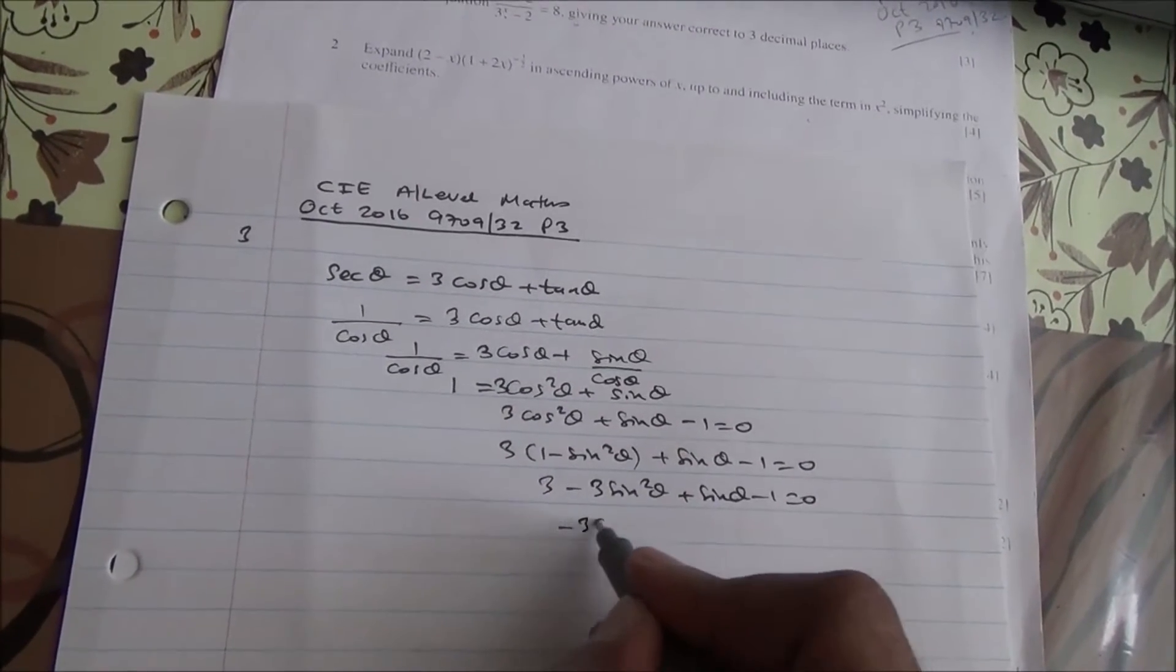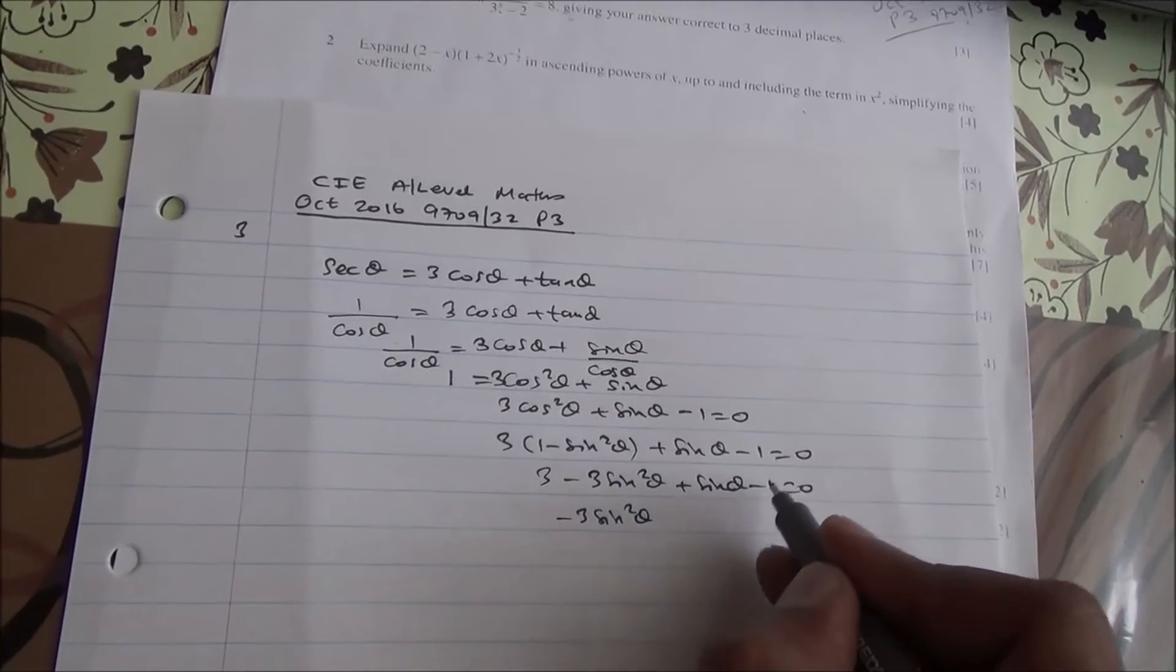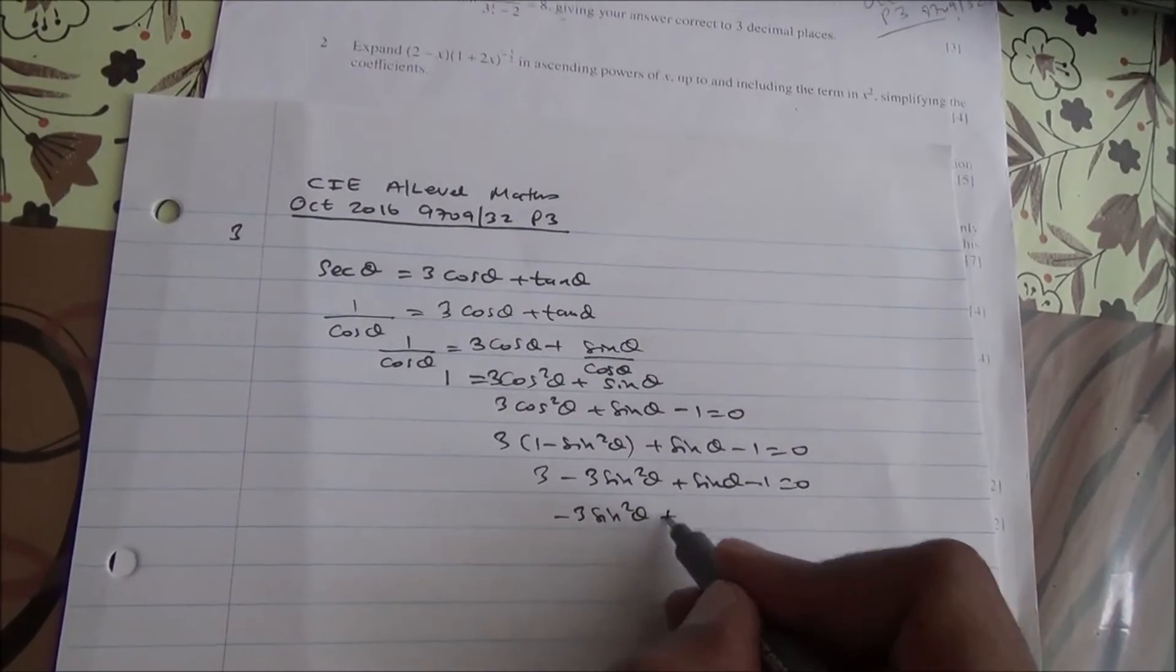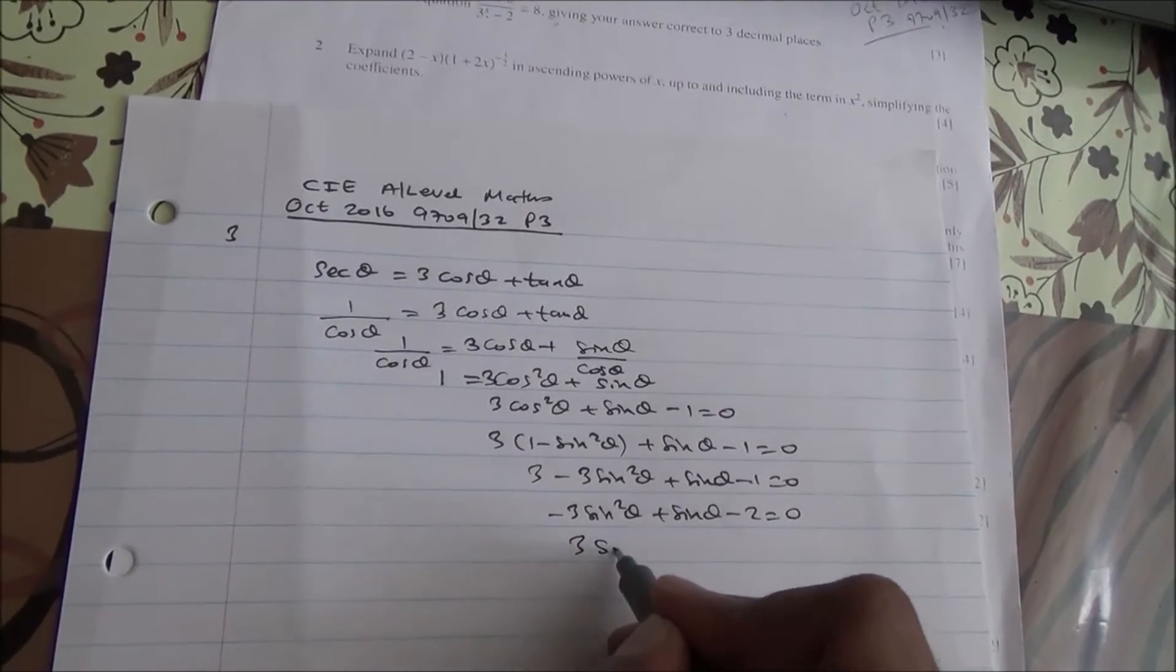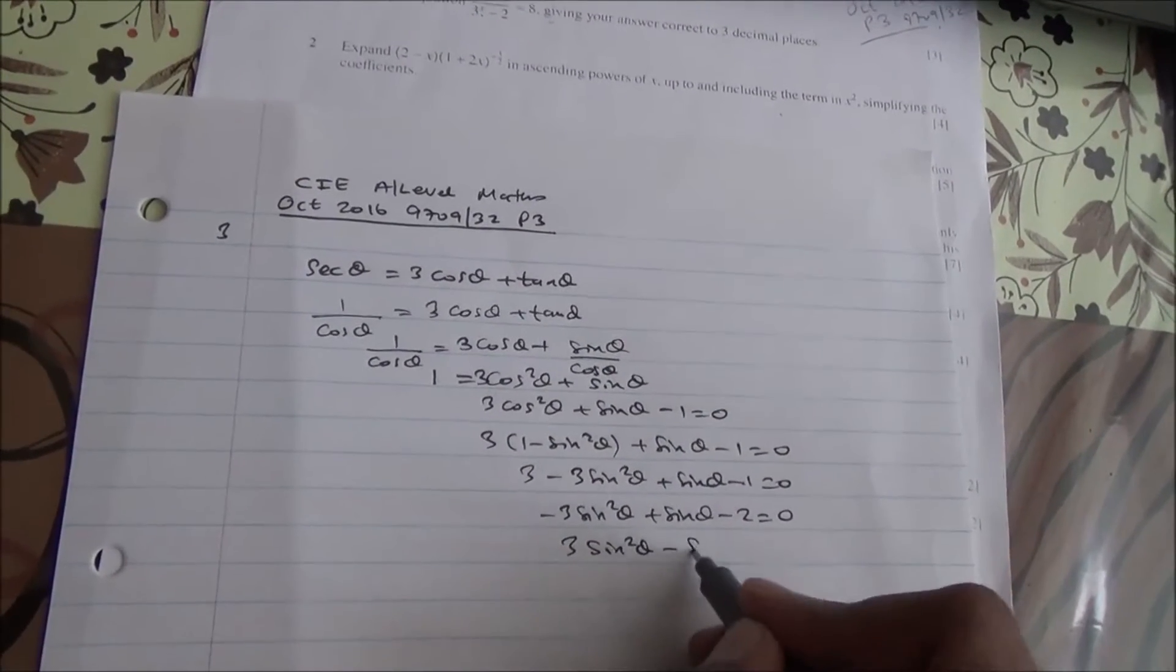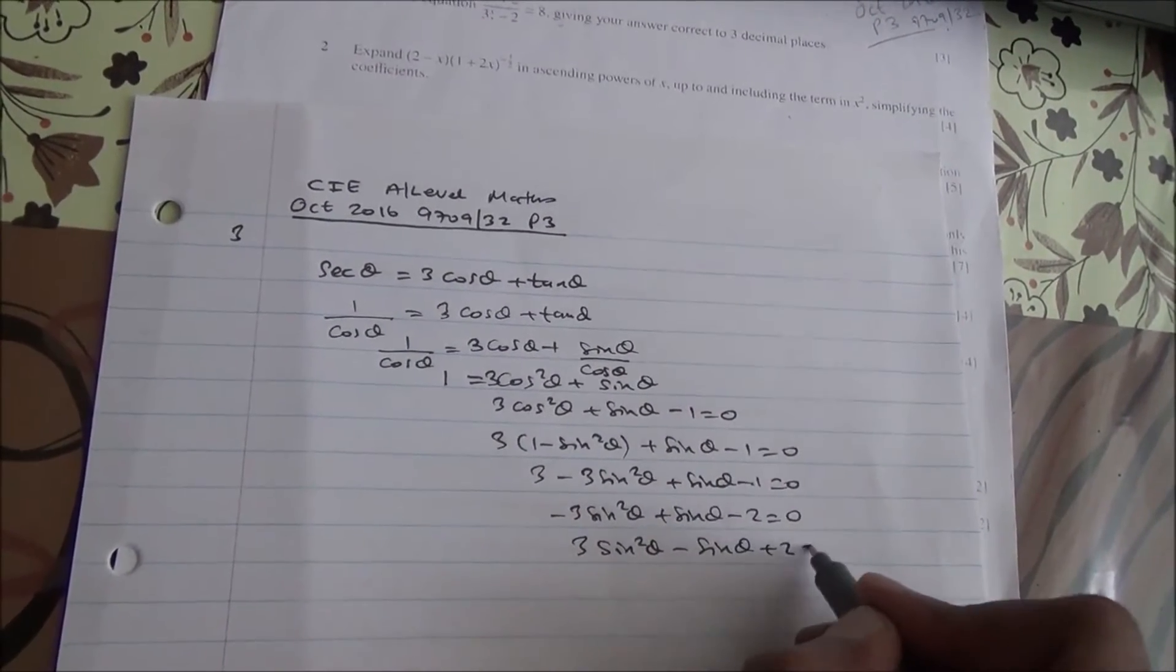Simplifying: -3sin²θ + sin θ + 2 = 0, which we can rewrite as 3sin²θ - sin θ - 2 = 0.